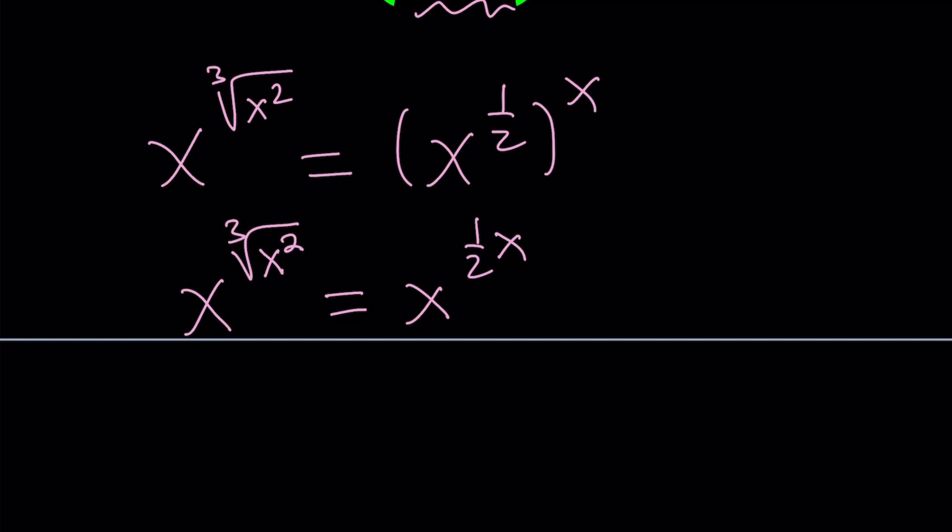So what do you do when you have the same base? Like something like a to the power b equals a to the power c. Well, you kind of talk about b equals c. You can talk about a being 1, or negative 1, so on and so forth. But let's make it a little easier on ourselves. First of all, we do know that x does not equal 0 because that's just not going to work.